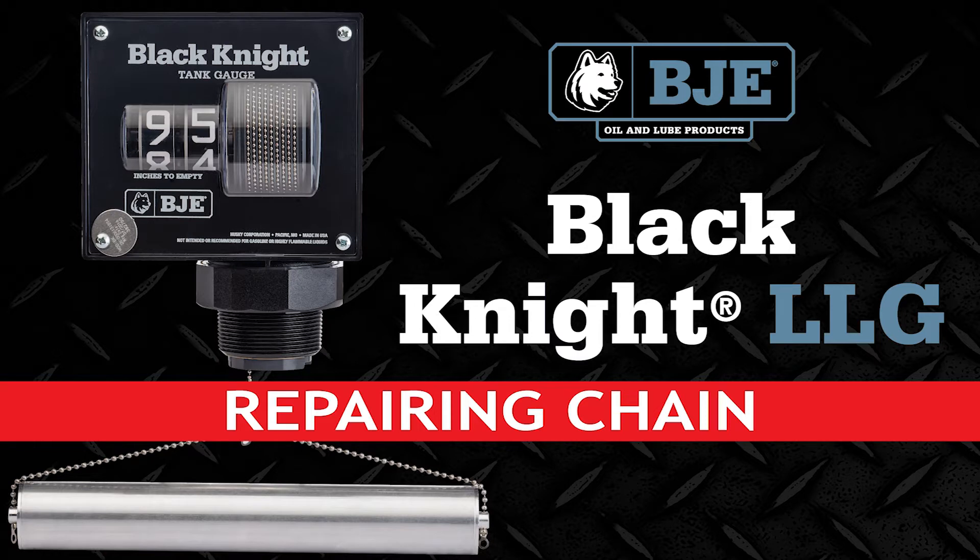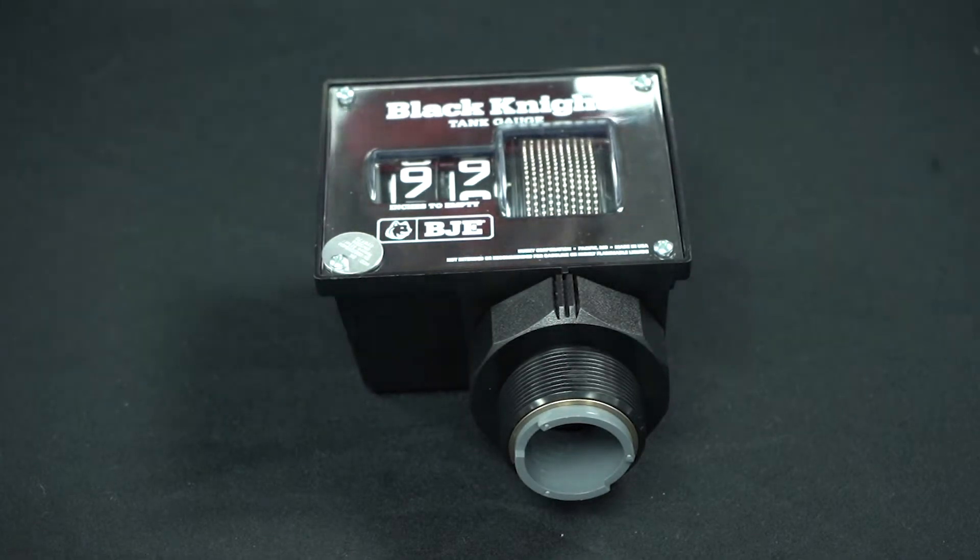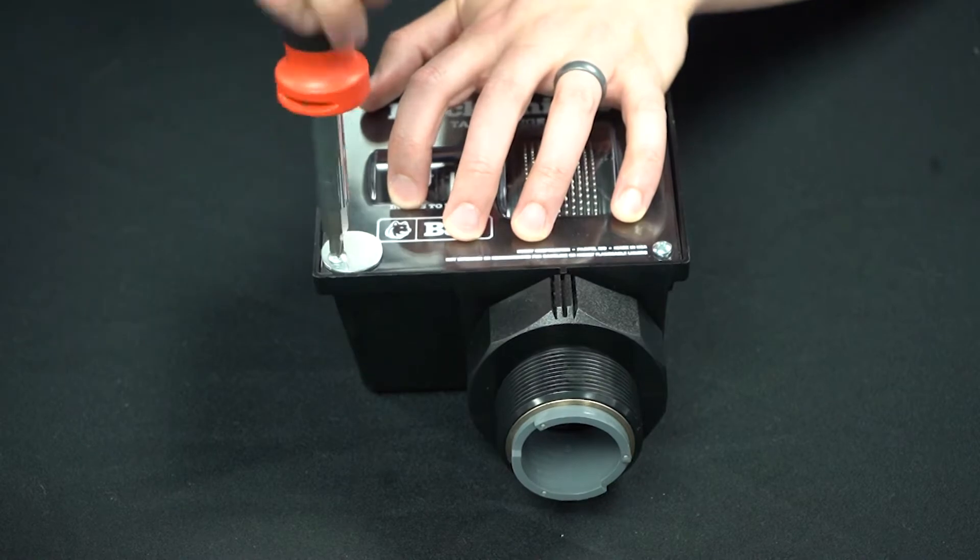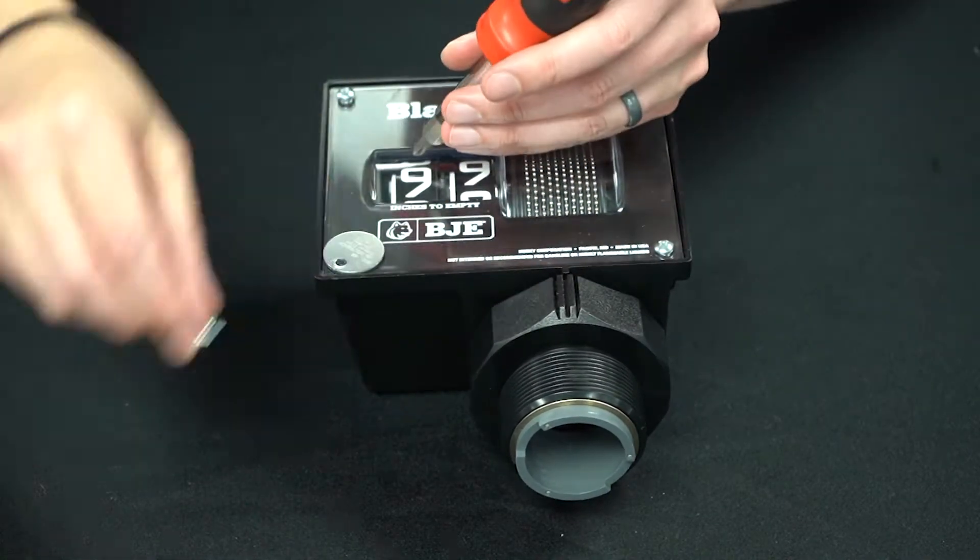This is a technical bulletin about how to repair a broken chain on your Black Knight tank level gauge. Remove the four screws, the cover, the face plate, and the gasket. Save those parts, you'll reuse them later.